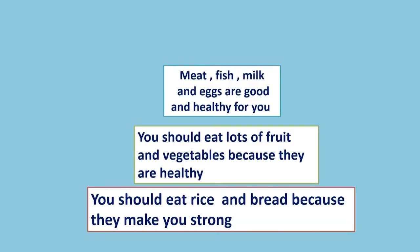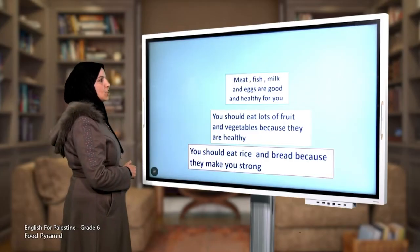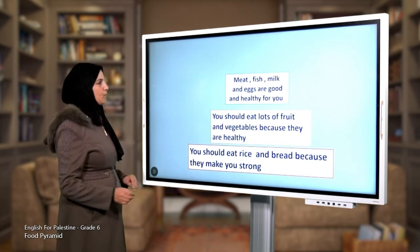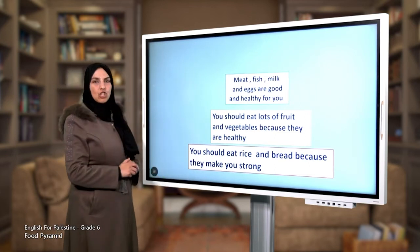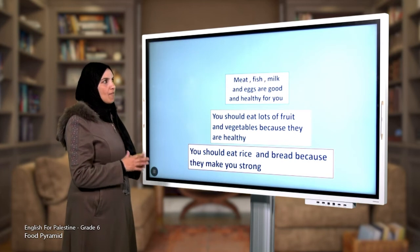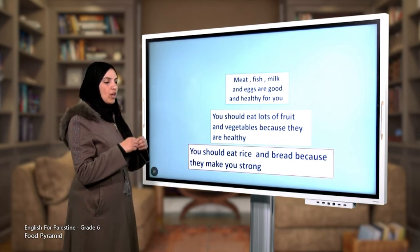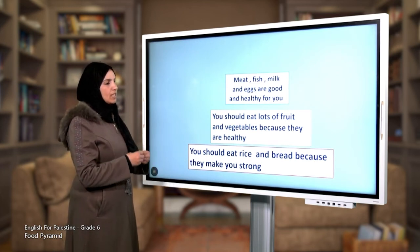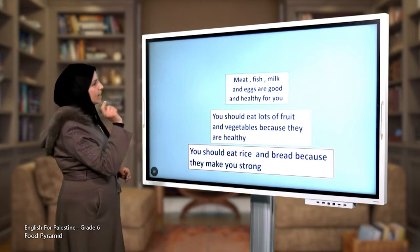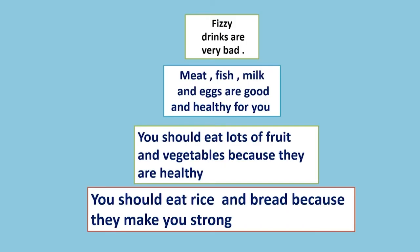Meat, fish, milk, and eggs are good and healthy for you, so you should eat them. Now at the top of the food pyramid we have unhealthy food, so you shouldn't eat those foods. Fizzy drinks are very bad, so you shouldn't drink them.